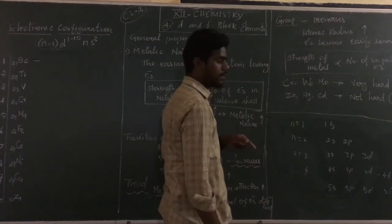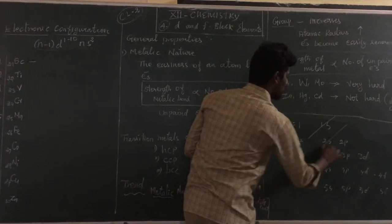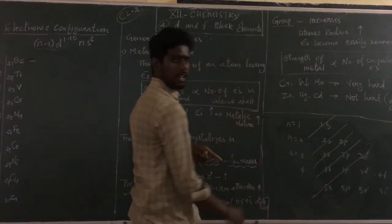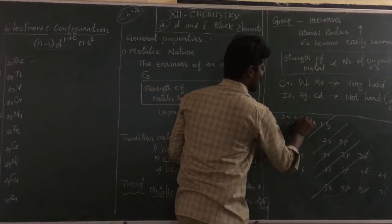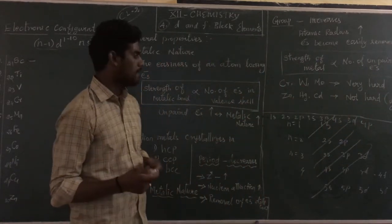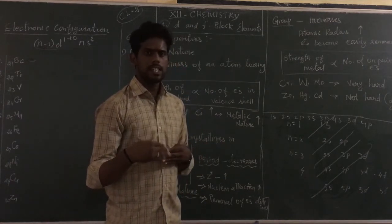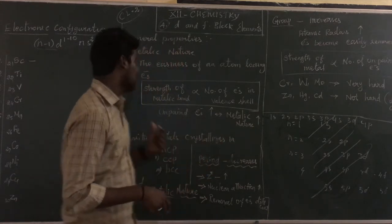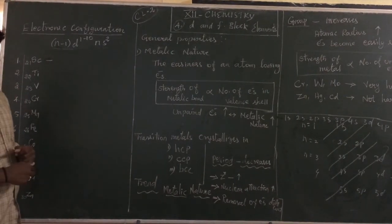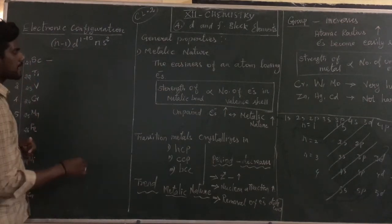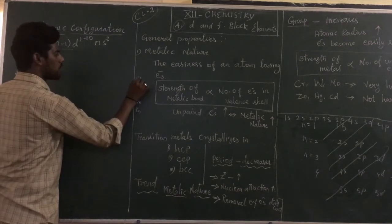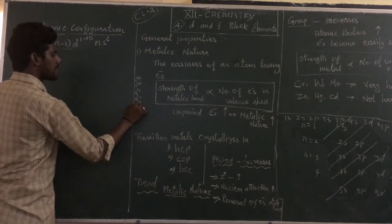If you want to fill the orbitals in order, the filling sequence is: 1s, 2s, 2p, 3s, 3p, 4s, 3d, 4p, 5s, 4d, 5p, 6s, 4f, 5d, 6p, 7s. The noble gas shortcuts are: neon at 10, argon at 18, krypton at 36, xenon at 54, and radon at 86.